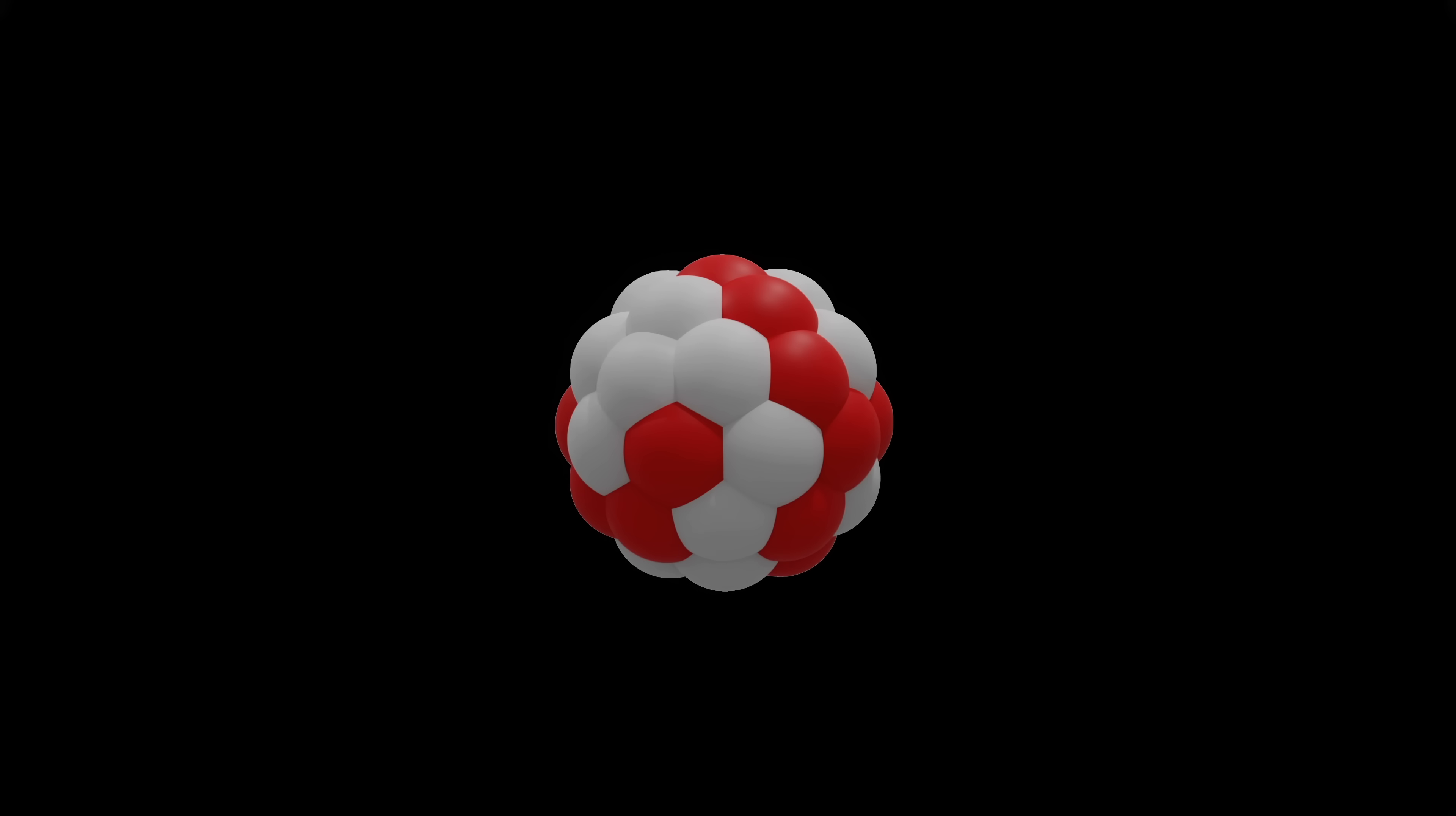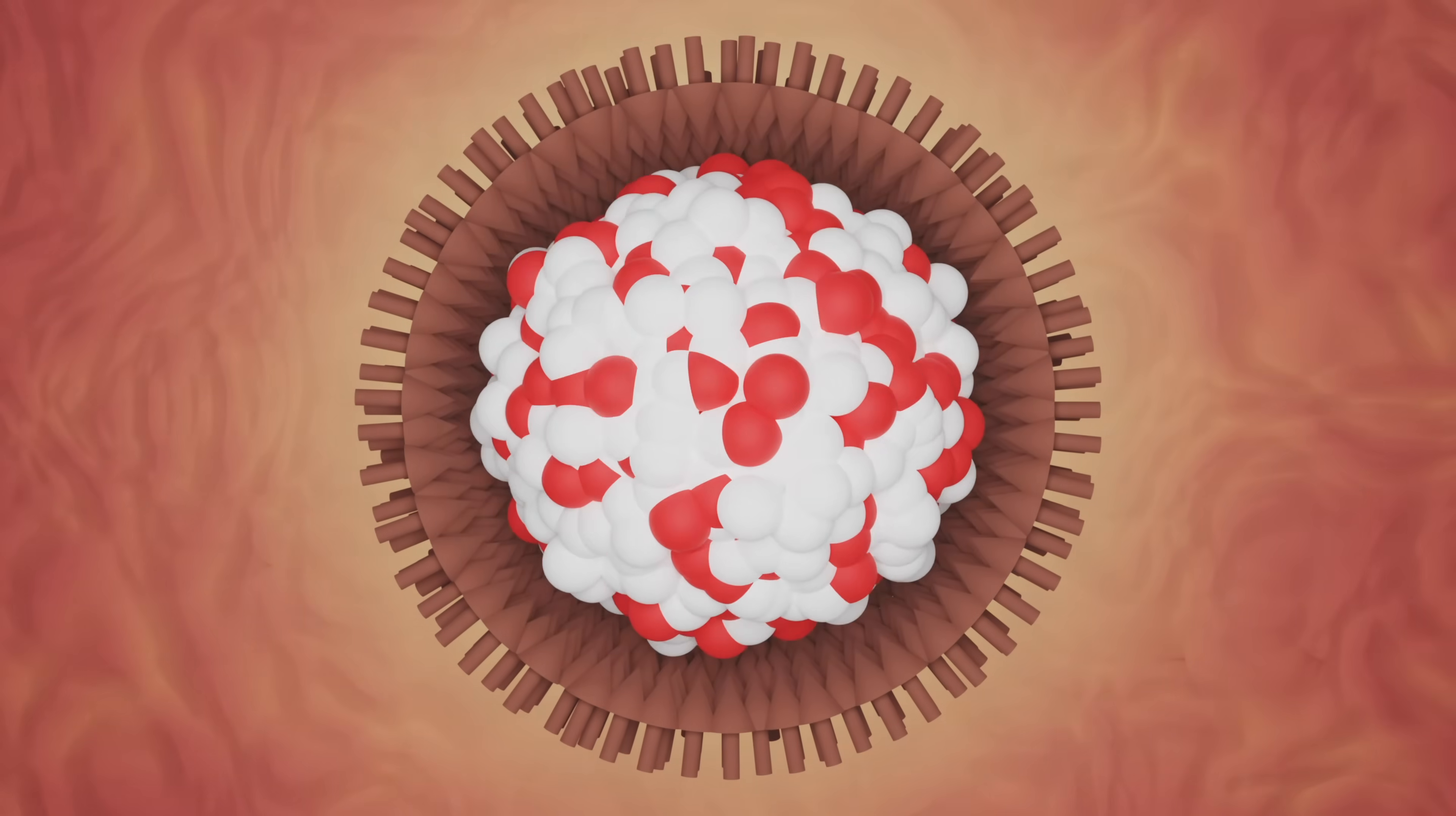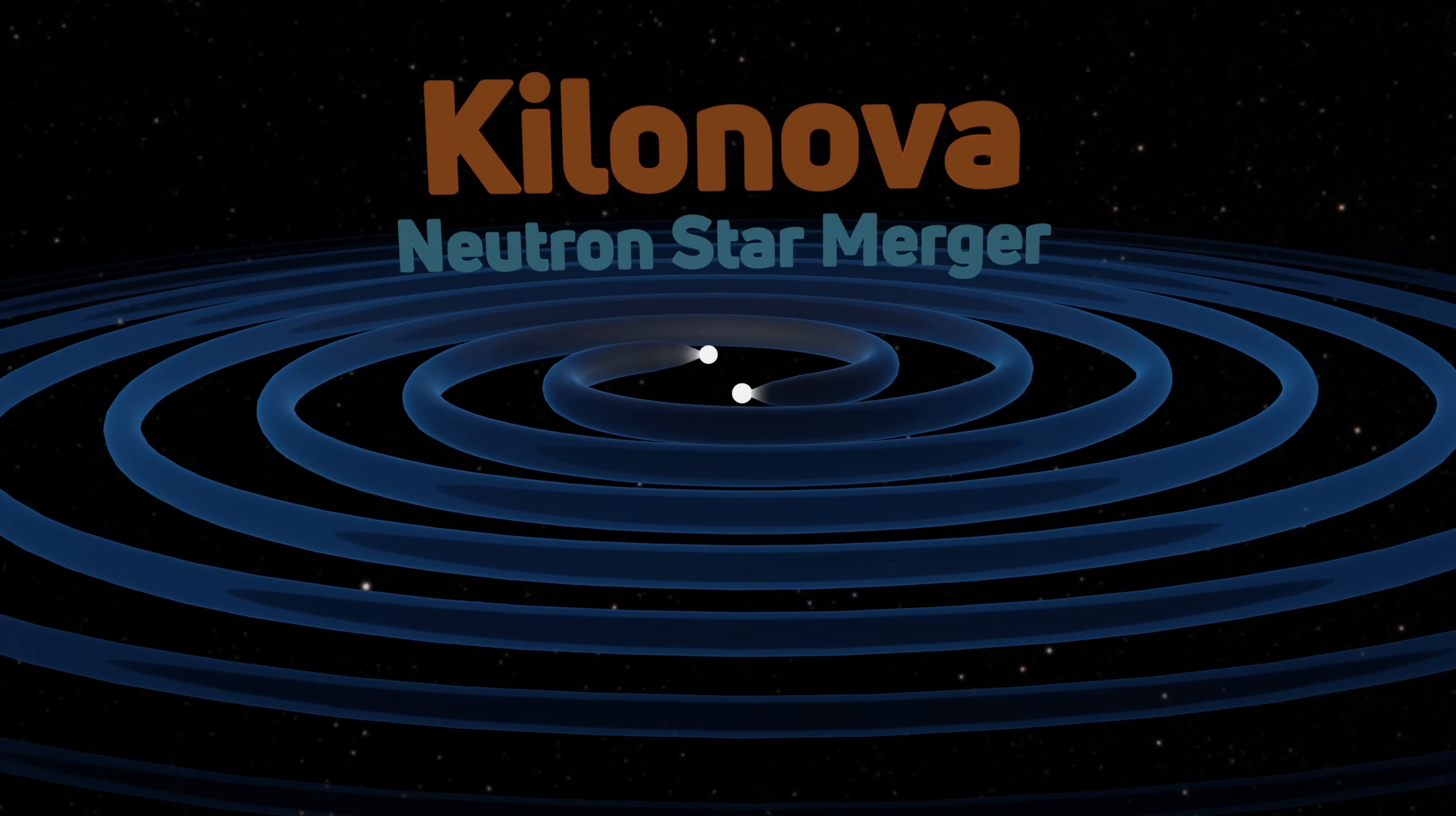In order to bombard nuclei with so many neutrons, the rapid process can only occur in environments with incredibly high neutron densities. The two most likely candidates for these locations are the neutron-rich cores of supernovae and the neutron-pure environments of a binary star merger, also known as a kilonova.